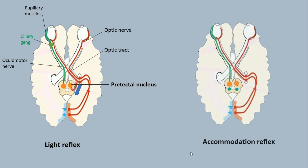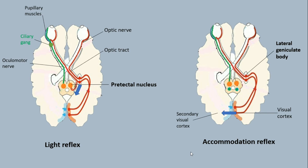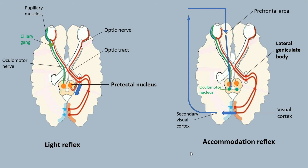On the other hand, afferent fibers for the accommodation reflex enter the lateral geniculate body to reach the visual cortex. They are then relayed to the secondary visual cortex, to the pre-frontal area, and finally reach the oculomotor nucleus in the midbrain. Efferent fibers traverse the same course through the oculomotor nerve to the ciliary ganglion, and supply pupillary muscles through short ciliary nerves.